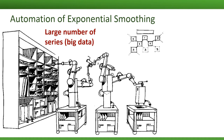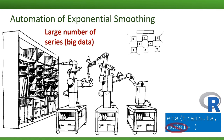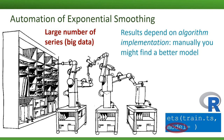Some software, like R, allows automated model selection. In R, you can simply leave out the model equals part in the ETS function. The point to remember is that the algorithmic implementation drastically affects the result. You can get very different models from different software implementations of automated exponential smoothing. In some cases, you might even be able to find a better model manually if you have a good idea of the type of trend and seasonality in your data.